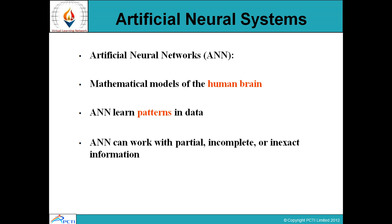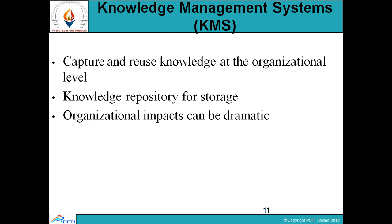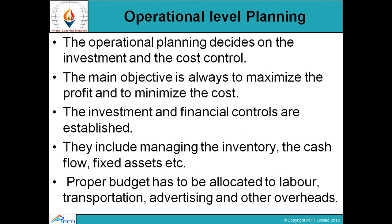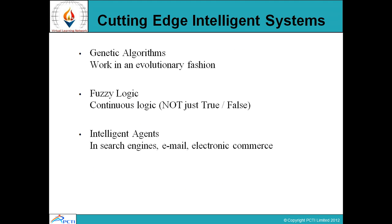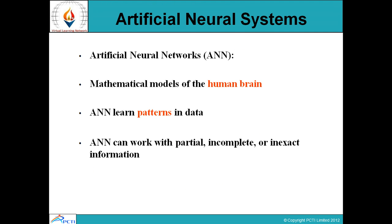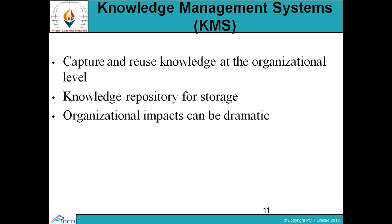Let us talk about the Artificial Neural Network. ANN are mathematical models of the human brain. ANN learn patterns in data — in short, they are referred to as artificial intelligence. ANN can work with partial, complete, or inexact information. Even if the data is incomplete or not exact, artificial neural networks are still able to proceed further.